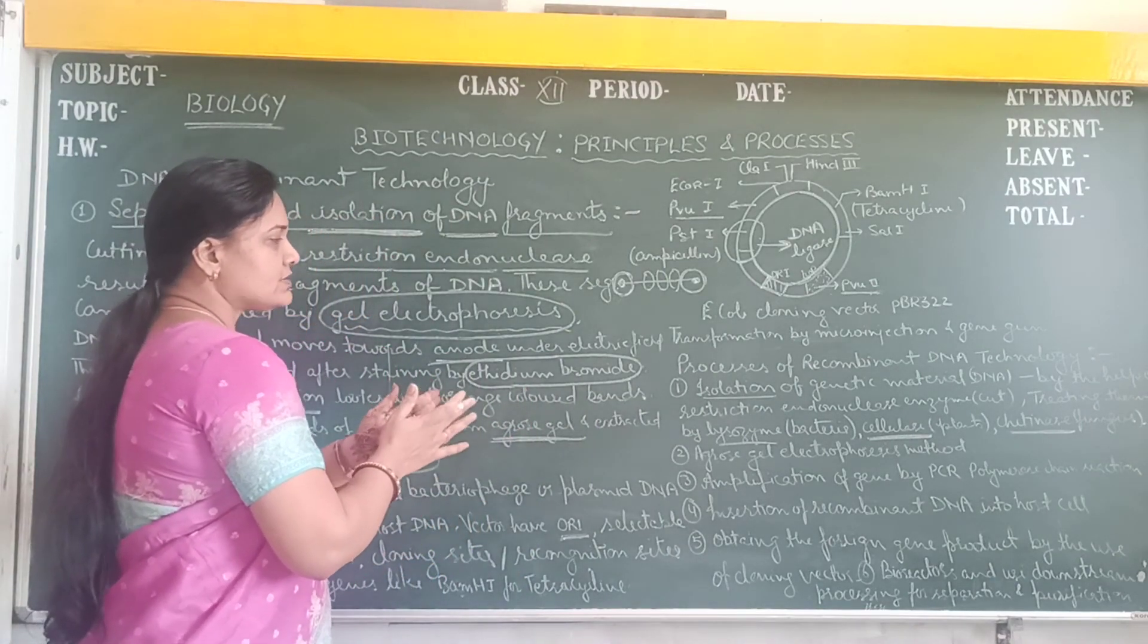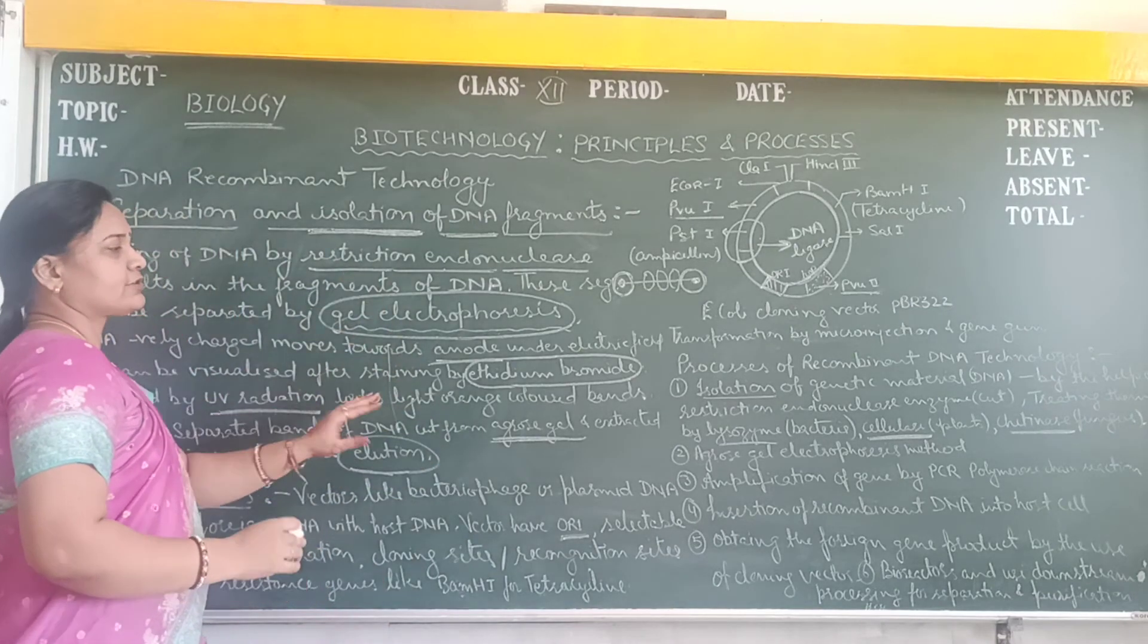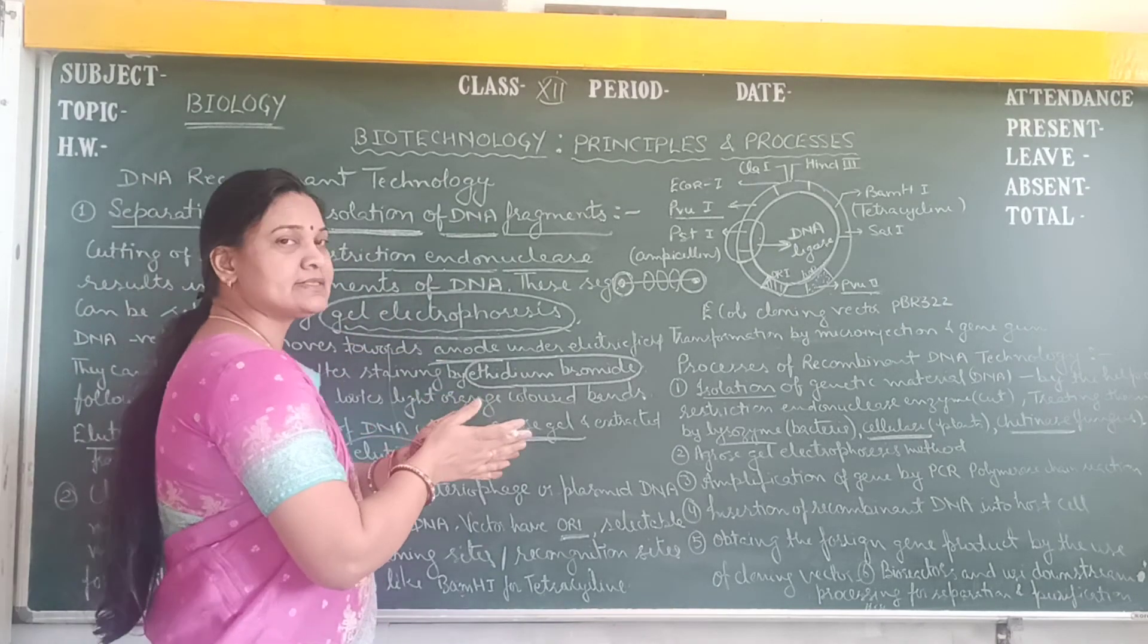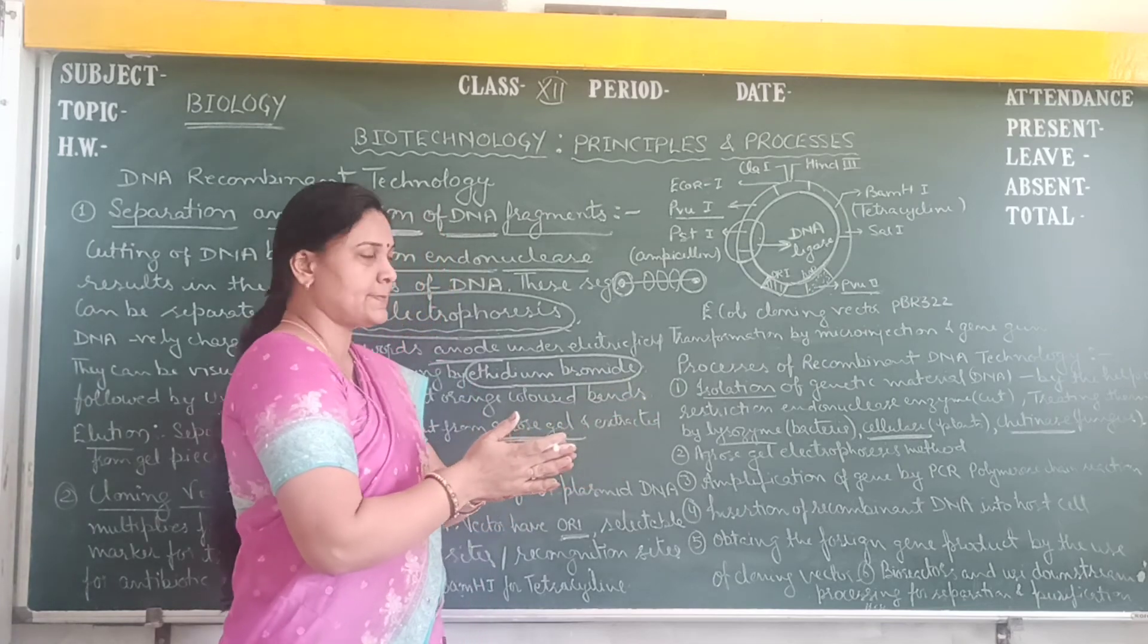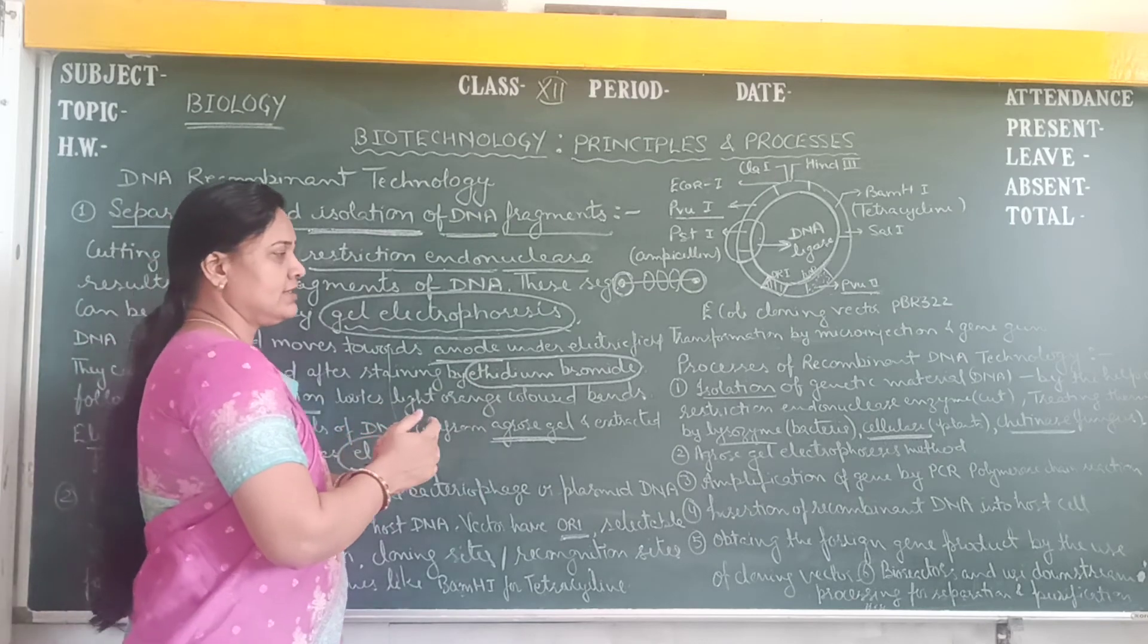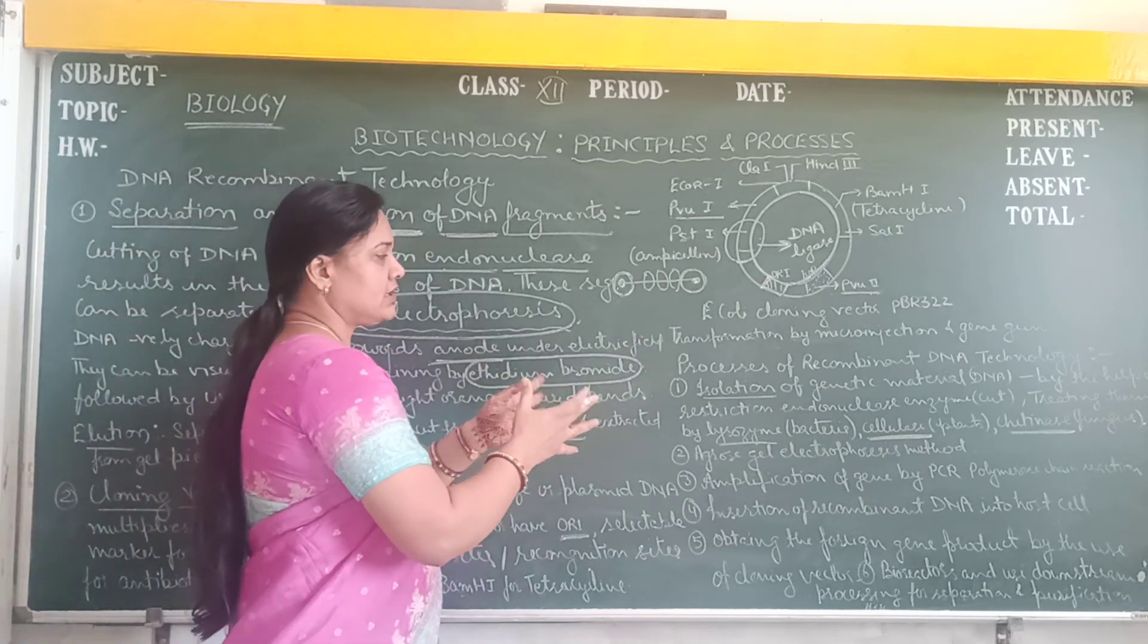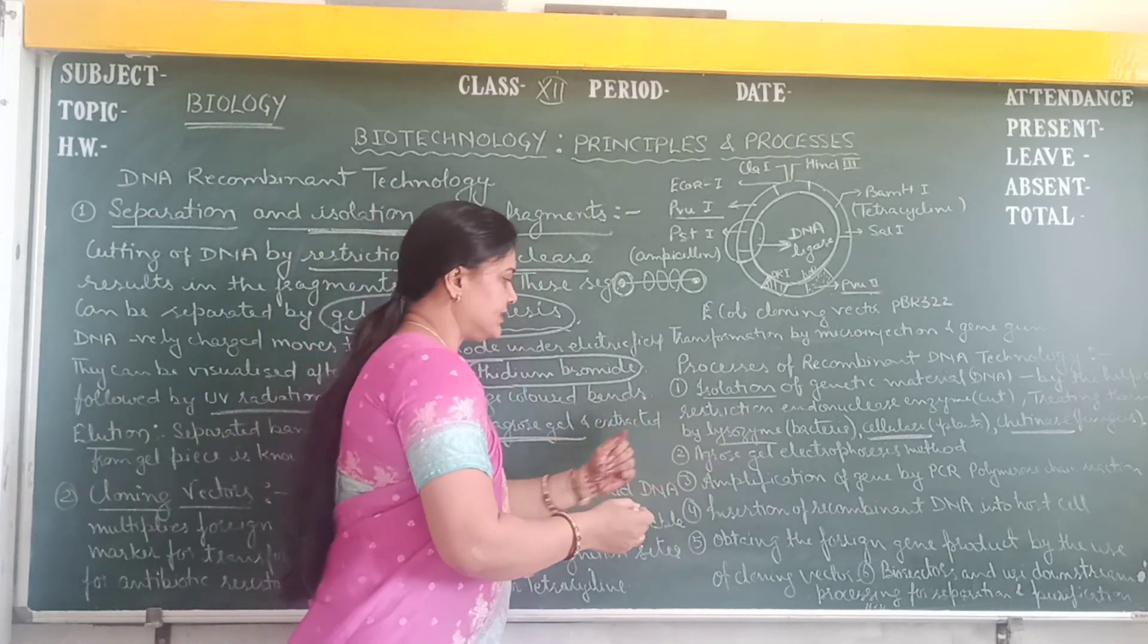The second step is agarose gel electrophoresis method. The agarose gel electrophoresis method separates the DNA fragments, smaller and larger fragments, with the help of ethidium bromide and agarose gel. The DNA fragments move towards the anode, as we have studied earlier.